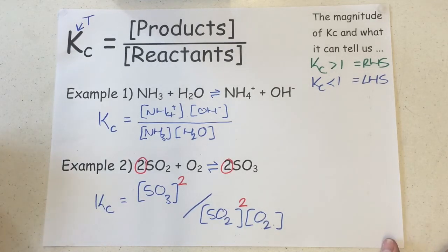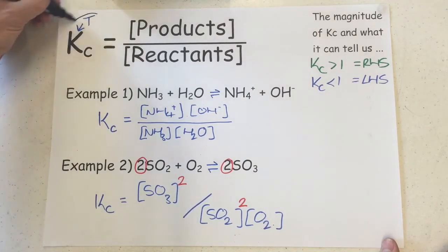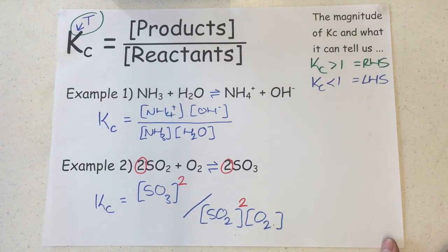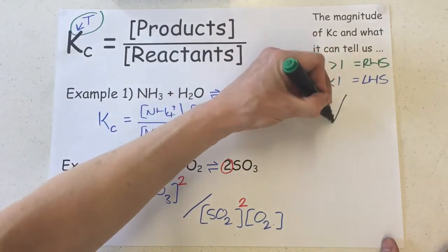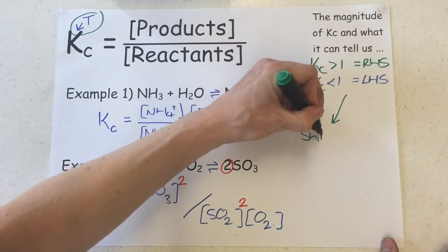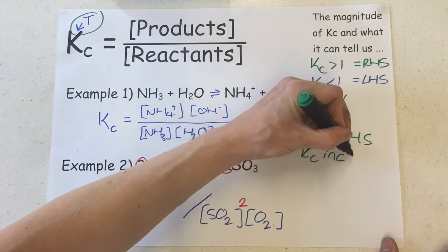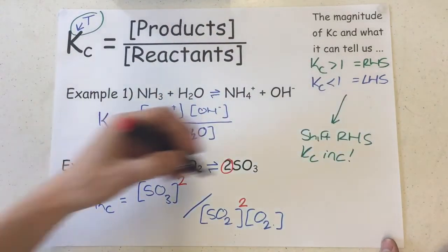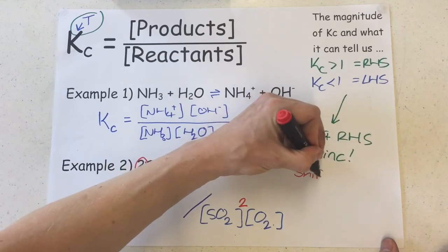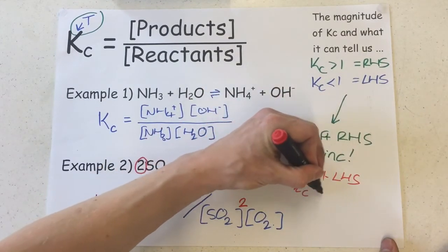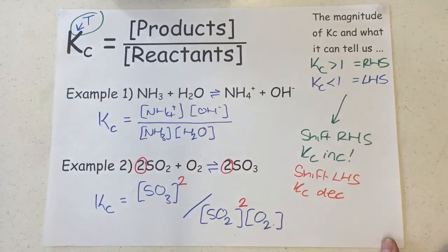What they also want you to know is how KC can increase and decrease based on a shift. I'd like to remind you at this point that it is only temperature that can ever affect the value of KC. We don't see anything else affect the value of KC, even though other things can affect the position of equilibrium. If we ever see a shift to the right-hand side, then KC will always increase. Whereas if we ever see a shift to the left-hand side, KC will always decrease.